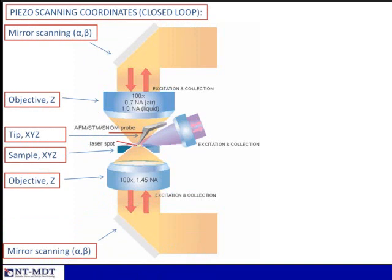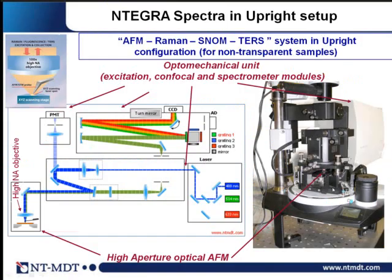Today I will mainly concentrate on tip-enhanced Raman scattering, where the AFM probe enhances our Raman signal. There is a special mirror scanner from the top, mirror scanning from the bottom; the tip can scan, the sample can scan X, Y, Z, and all objectives can scan in Z direction. This is the photo of the specifically upright configuration — the lens is from the top of the AFM cantilever and sample. Here you can see the high-NA lens, the cantilever under the lens, the sample, and on the back side the Raman spectrometer.